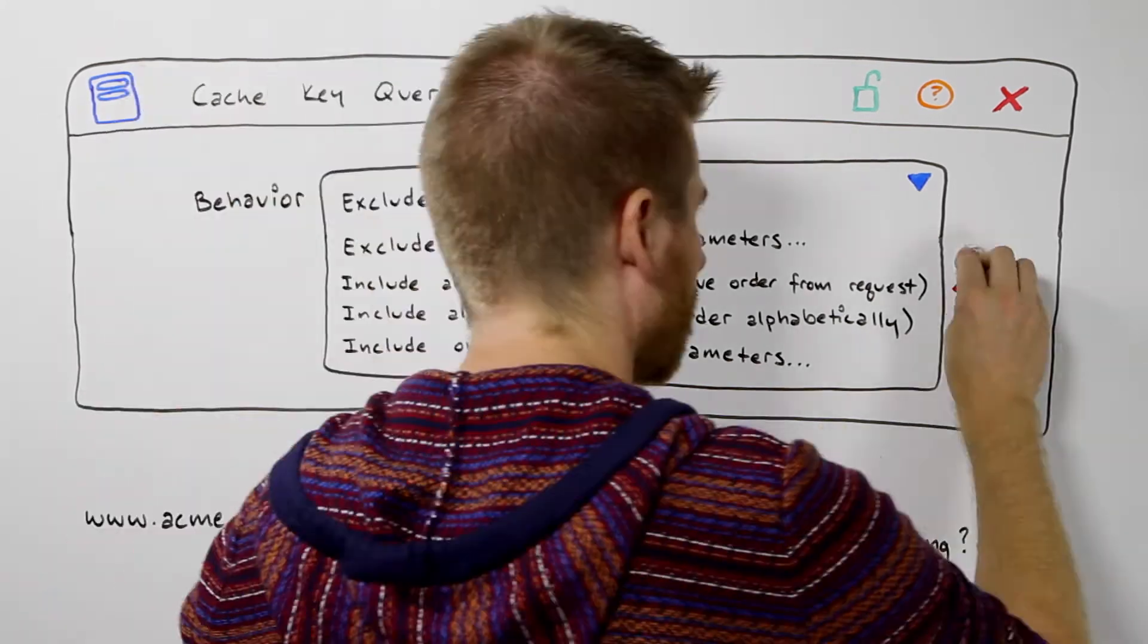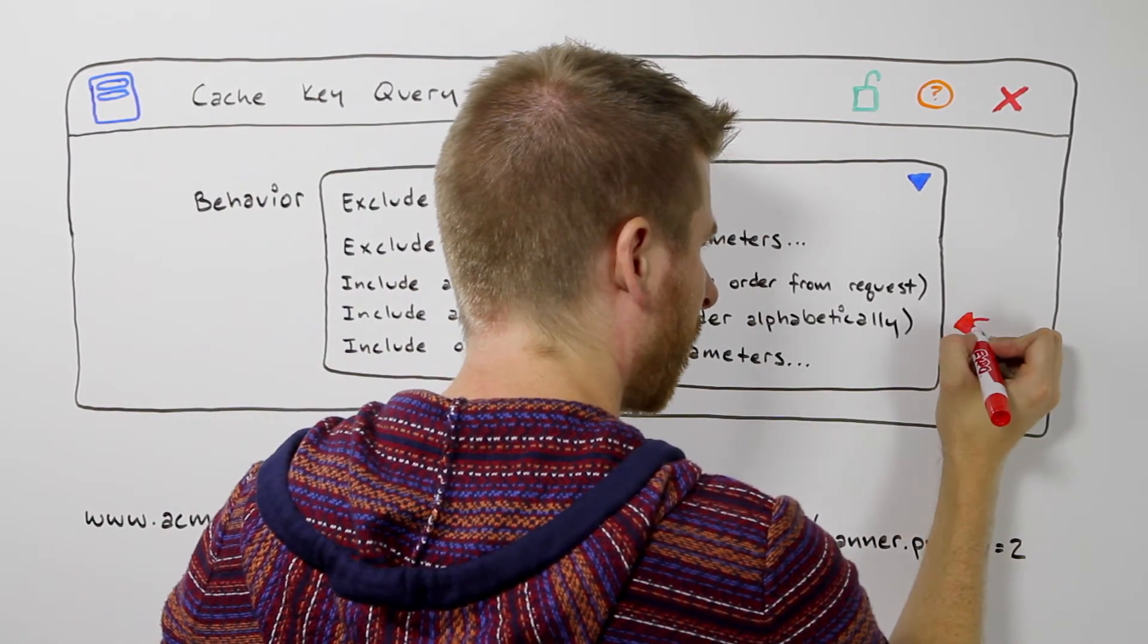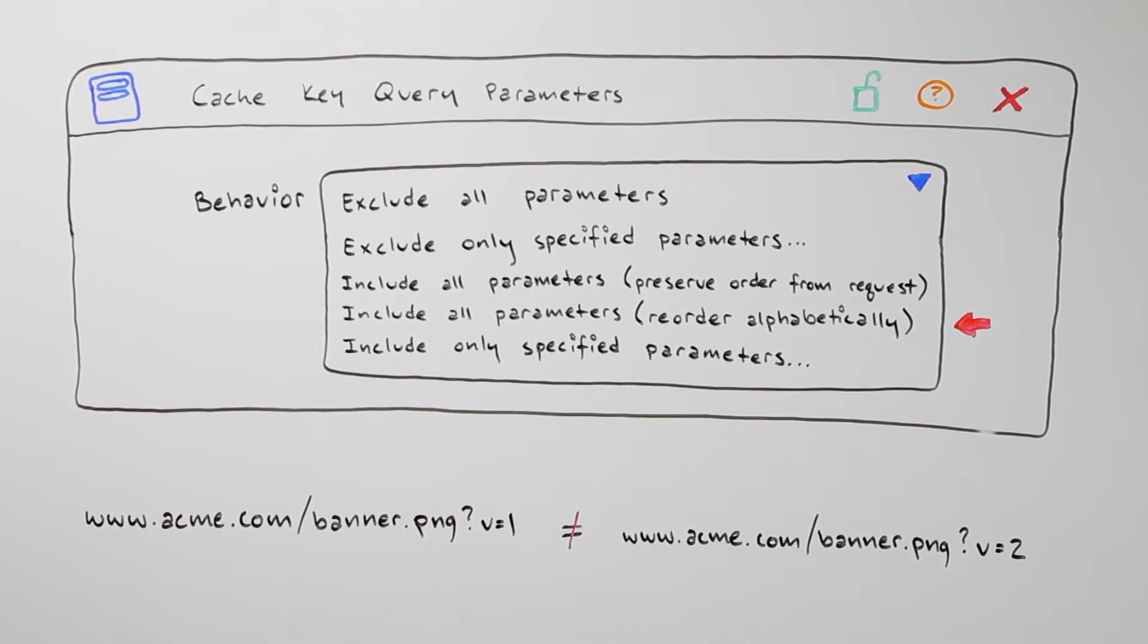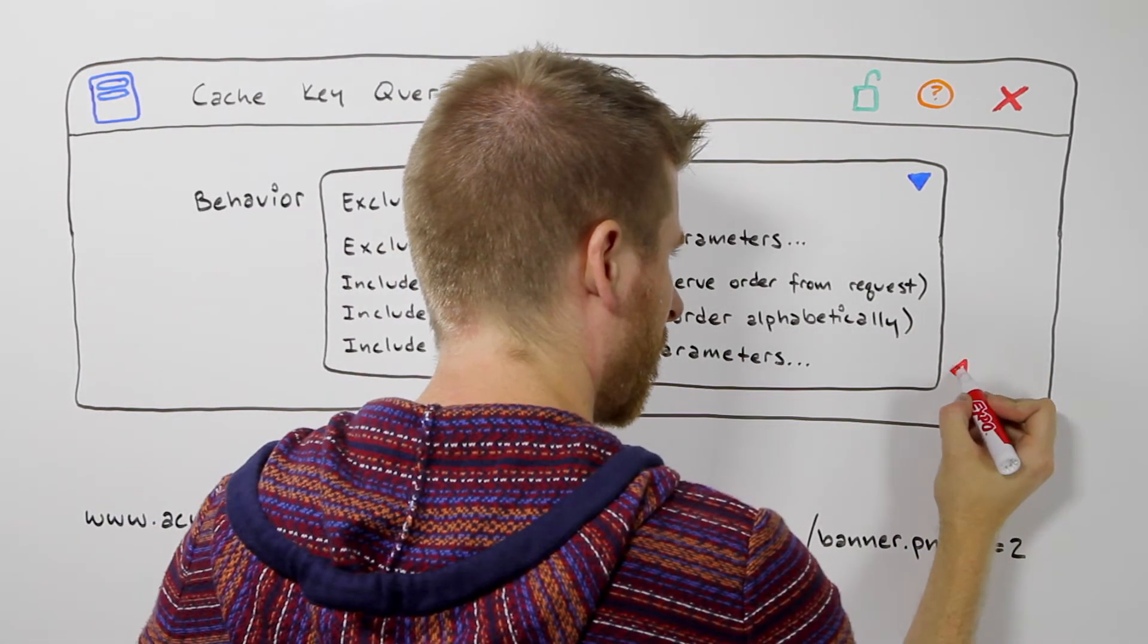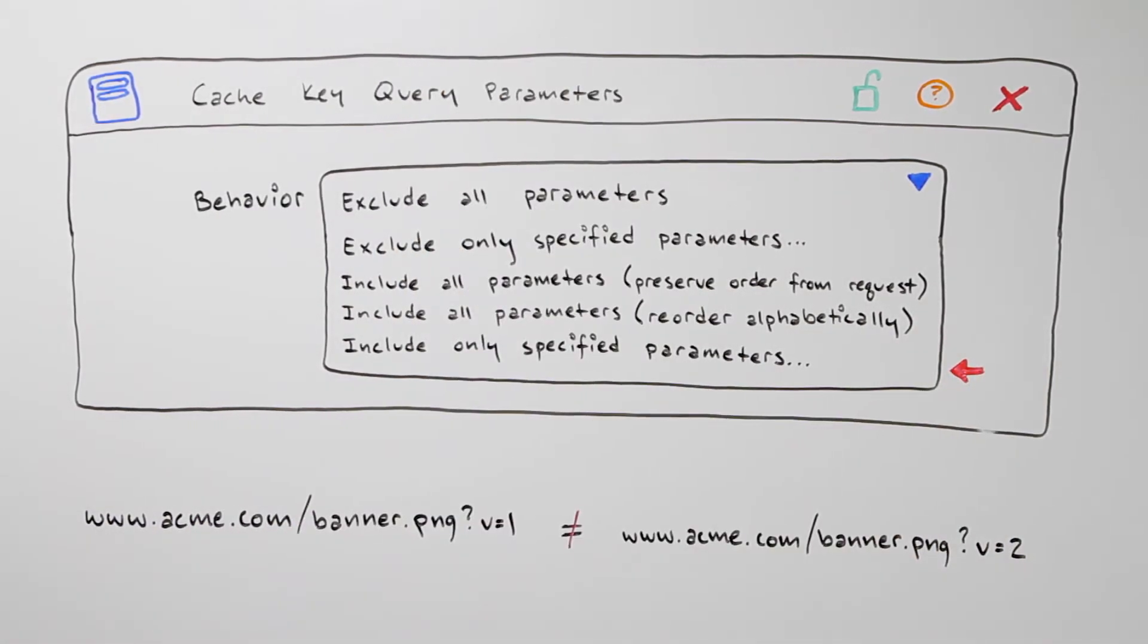You can go further and choose to include all of them as they're indicated in the incoming URL, or reorder them alphabetically, or only include certain parameters.